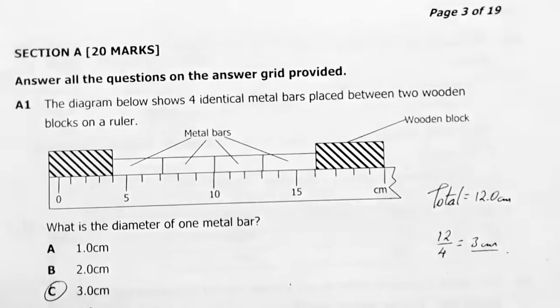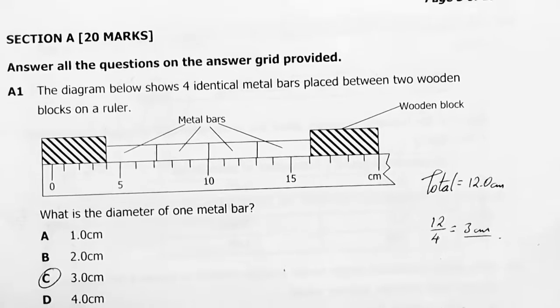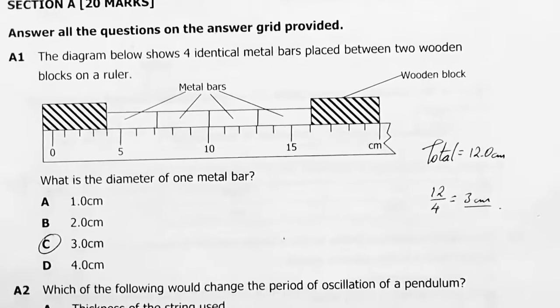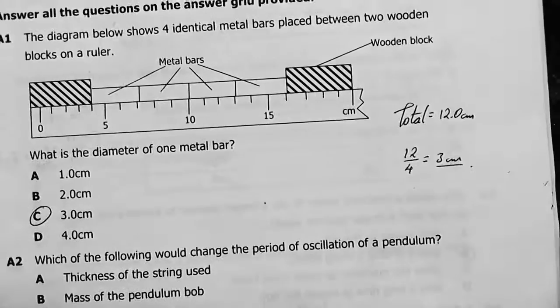Question 1: The diagram below shows four identical metal bars placed between two wooden blocks on a ruler. What is the diameter of each metal bar? These are the four metal bars, one, two, three, four, and their total length is 12 centimeters.